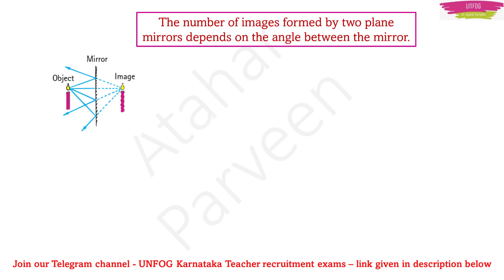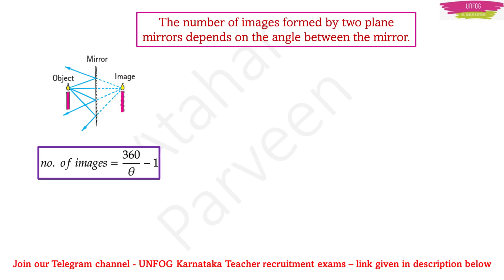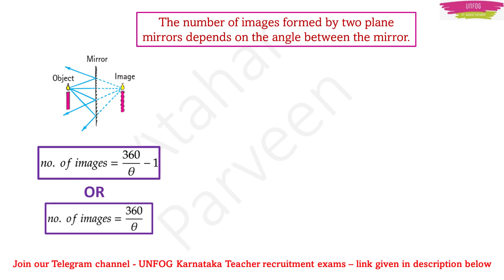There are two formulae to find the number of images formed by two plane mirrors. One formula is: number of images = 360/θ − 1. Another formula is: number of images = 360/θ. The doubt aspirants have is which formula should be used when. This is a very important concept and I am expecting one question from it in HSTR, GPSTR, CRIES, and EMRS PGT exams.